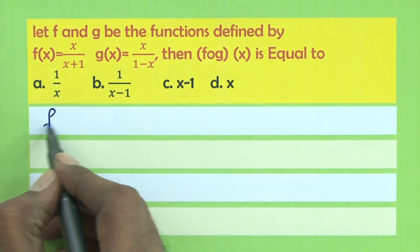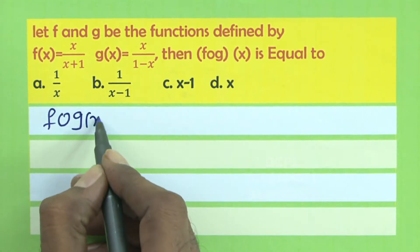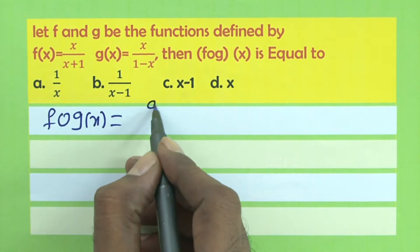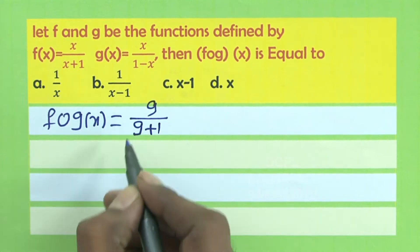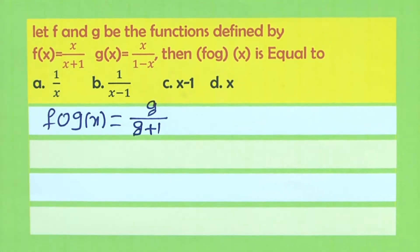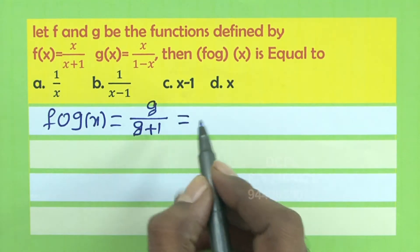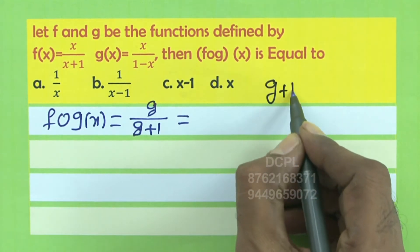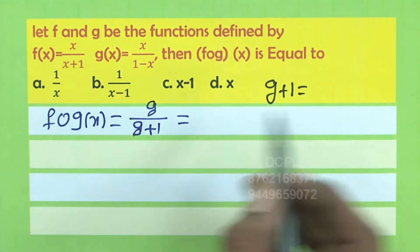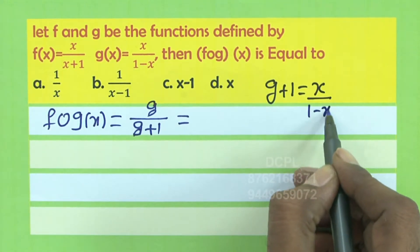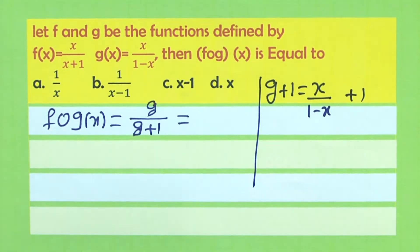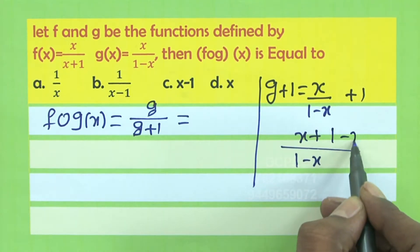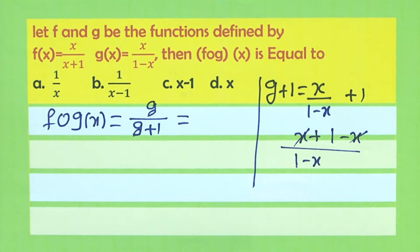f(g(x)) is obtained by replacing x with g(x) in f, giving g/(g+1). Here g = x/(1-x). To find g+1, take (1-x) as LCM: x/(1-x) + 1 = (x + 1 - x)/(1-x) = 1/(1-x).